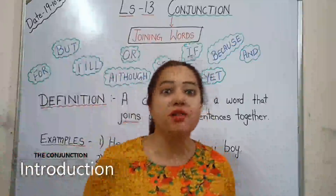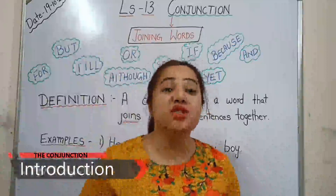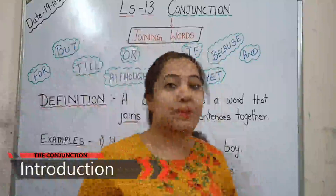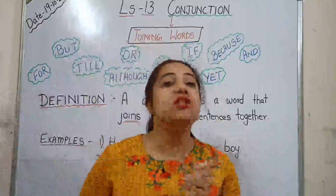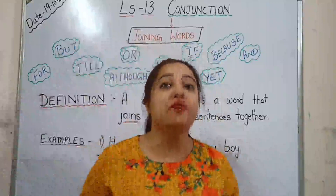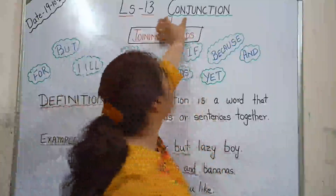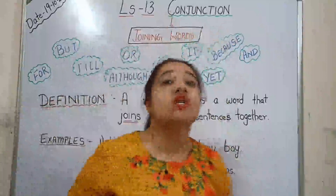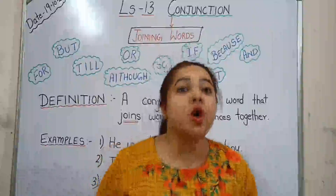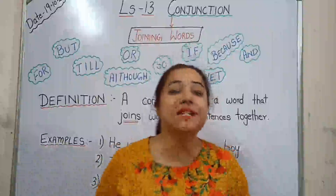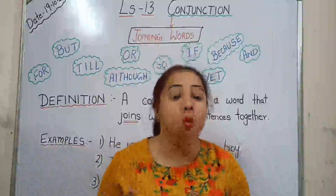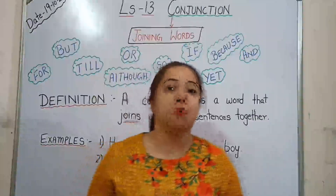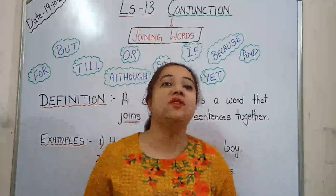Do you know what are conjunctions? Conjunctions are basically the joining words. The word conjunction is made from the words con and junction — con means joint and junction means together. So conjunction is a word that basically means join together. Conjunction is a very important topic and a very important part of speech.